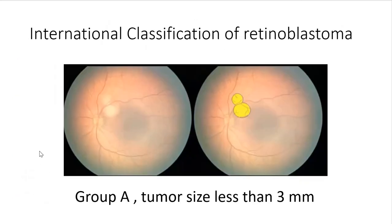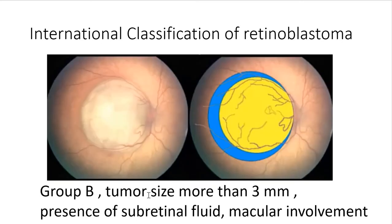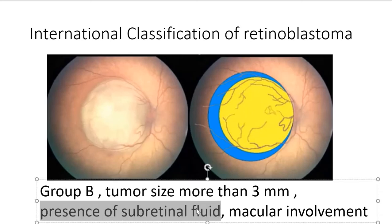Regarding the classification of the disease, the most important is the International Classification of Retinoblastoma. It depends on the size, site of the tumor, presence of vitreous seeds, or extension outside the eye. Group A: tumor size less than 3 mm, away from the macula and optic nerve, with no subretinal fluid or seeds. Group B: tumor size more than 3 mm, may involve the macula, proximal to the nerve, with possible subretinal fluid but no vitreous seeding.